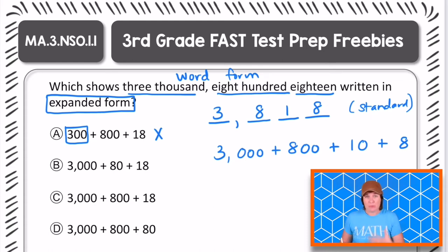Choice B, we have 3,000, plus 80, but that 80 should be what? 800. Okay, that's what makes it wrong, so I'm going to eliminate that one.